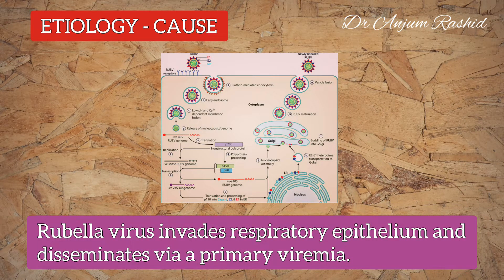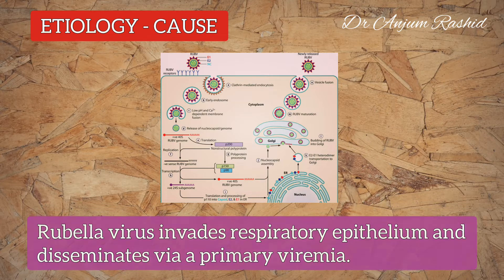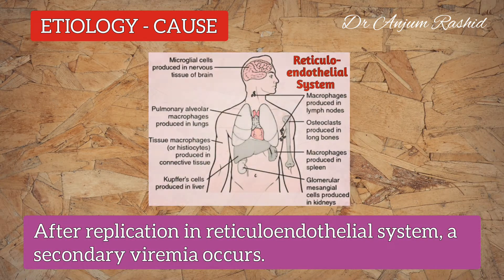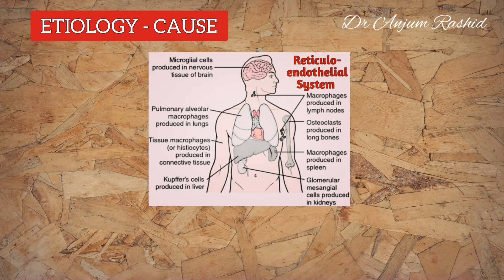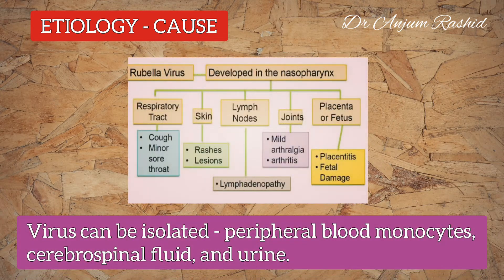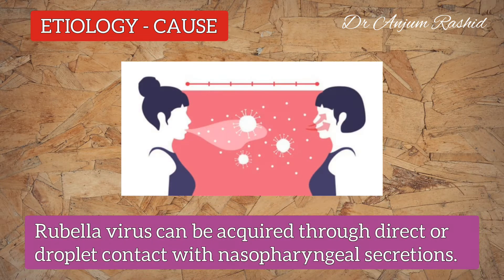Rubella virus invades the respiratory epithelium and disseminates via a primary viremia. After replication in the reticuloendothelial system, a secondary viremia occurs. At this stage, the virus can be isolated from the peripheral blood monocytes, cerebrospinal fluid, and urine.